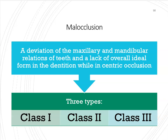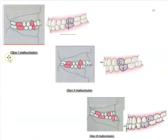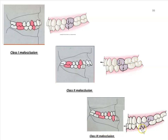There are three classifications of occlusion. Class 1 is when the mesial buccal cusp of the maxillary first molar is aligned with the mesial buccal groove of the mandibular first molar. In Class 2, the mandibular teeth are shifted inward and the mesial buccal groove is distal to the cusp. In Class 3, the mesial buccal groove is mesial — ahead of the mesial buccal cusp of the maxillary first molar.